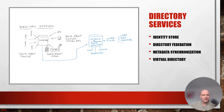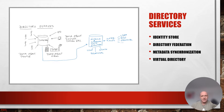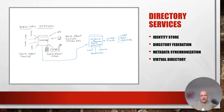Directory services are the old iron of the business — they need to go away with the mainframe and green screen applications, and they need to modernize. Directory services are made up of four components: identity store, directory federation, metadata synchronization, and virtual directories. Let's paint a picture about the federation services.